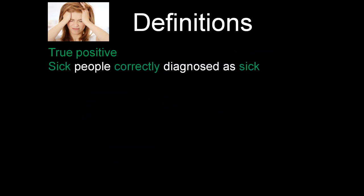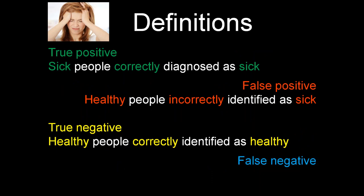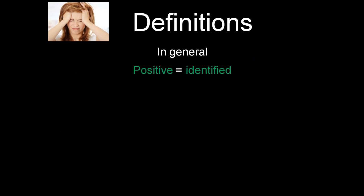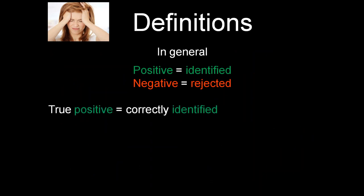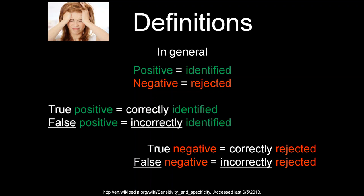True positive means sick people that are correctly diagnosed as sick. False positive are healthy people incorrectly identified as sick. True negative: healthy people correctly identified as healthy. False negative: sick people incorrectly identified as healthy. In general, when we say positive, substitute the word 'identified'; and if negative seems confusing, substitute the word 'rejected.' True positives are patients correctly identified. False positives are incorrectly identified. True negative: correctly rejected. False negative: incorrectly rejected.